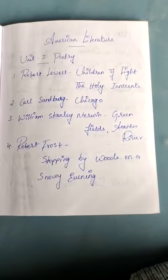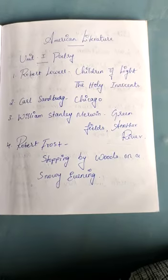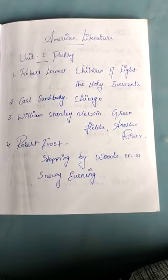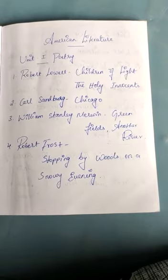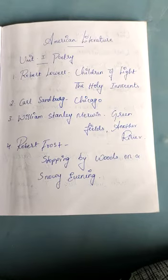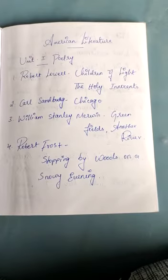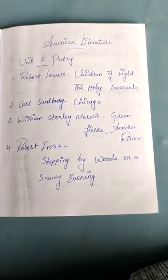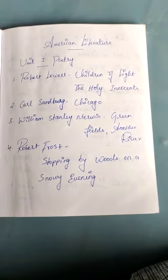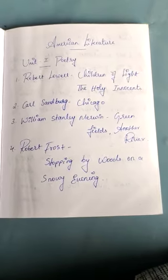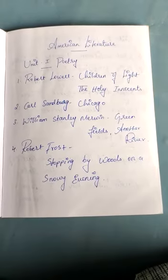My dear students, in American Literature we have five major units. Unit 1 we have Poetry. In that, the first one is Robert Lowell's Children of Light and The Holy Innocents. Second lesson, Carl Sandburg's Chicago. Third one, William Stanley Merwin's Green Fields and Another River. Fourth one, Robert Frost's Stopping by Woods on a Snowy Evening.